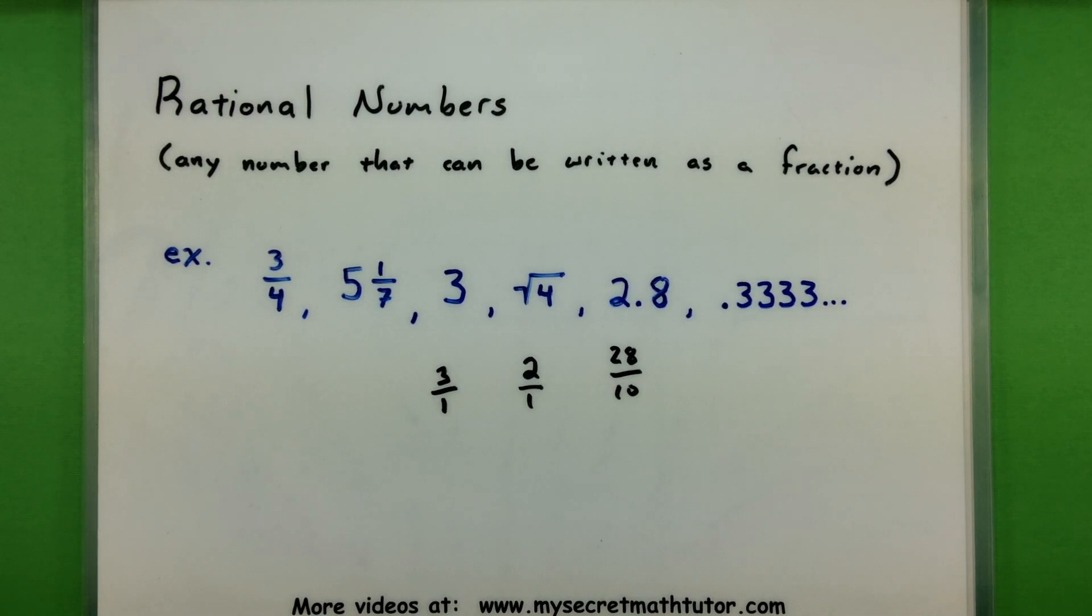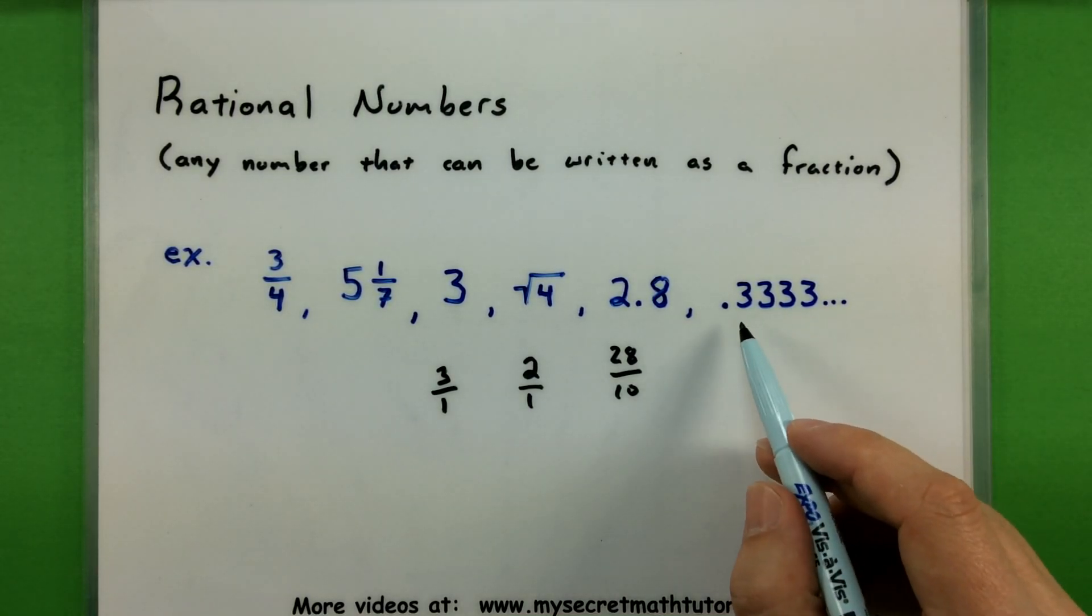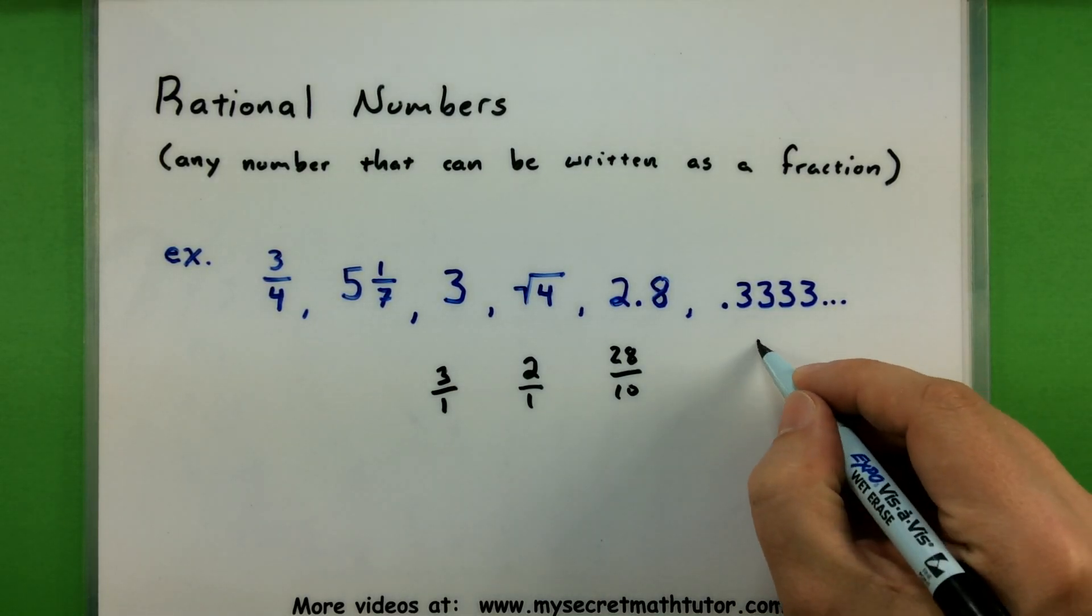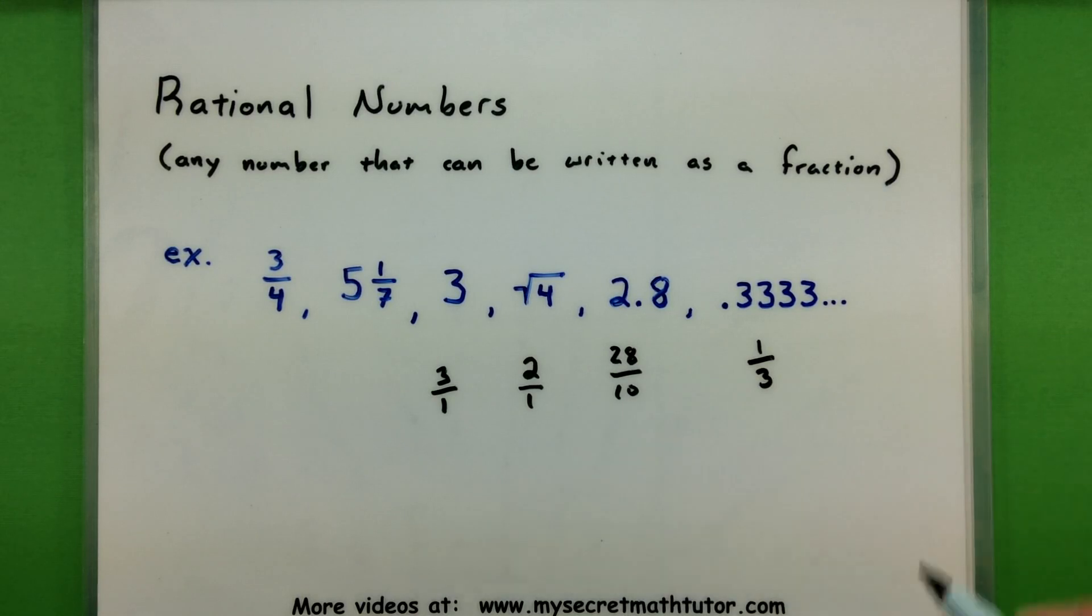Numbers that go on forever and ever might be a rational number as long as they repeat themselves along the way. So something like .33333 repeating is actually just the fraction one third. And since I can write that one as a fraction, of course it gets to be a rational number. So be on the watch out for any type of number that you can write as a fraction so that you know it goes into the rational numbers group.